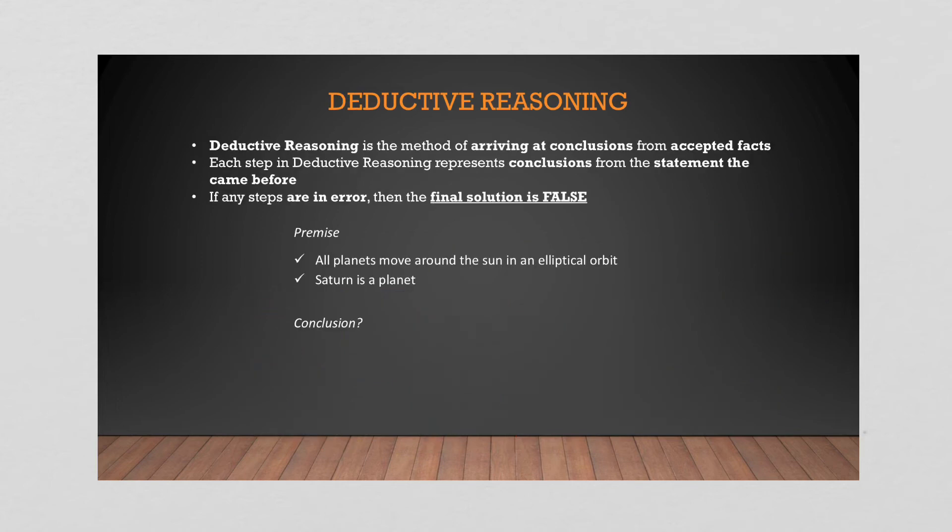Now, let's quickly look at deductive reasoning. Deductive reasoning is when you arrive at a conclusion from information given. You deduce facts from facts. So you cannot make an error. If there is an error in the facts, your solution cannot be valid. So you have premises and you have conclusions. So here's an example. All planets move around the sun in an elliptical orbit, which means a slightly oval orbit. Saturn is a planet. Okay. So what can we determine from this? We can determine that Saturn moves in an elliptical orbit.